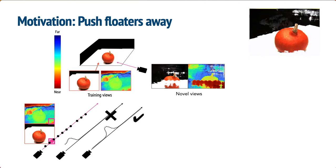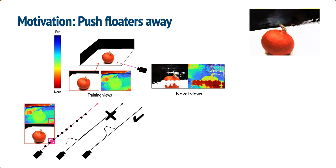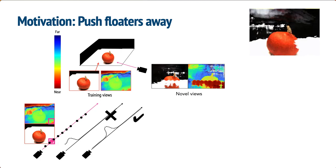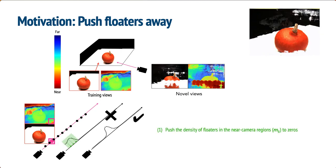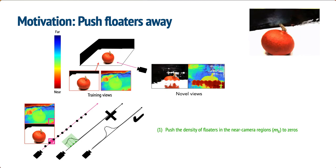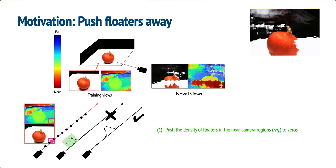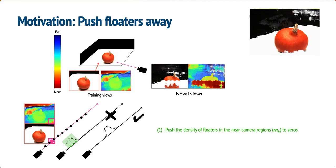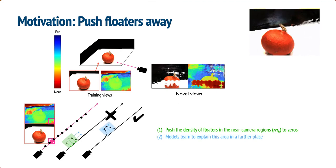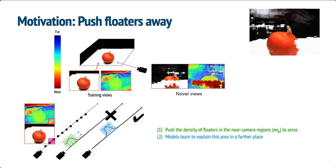Therefore, we propose the occlusion regularization method to alleviate this issue. Specifically, FreeNeRF pushes the density of objects in near-camera regions to zero and learns to explain those rays in a further place.